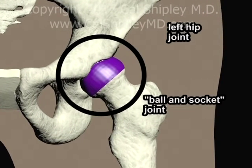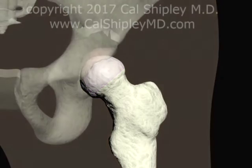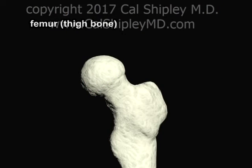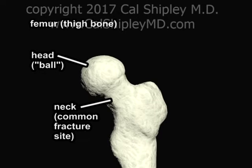The hip joint is known as a ball and socket joint. The ball component of the joint is contributed by the femur, commonly known as the thigh bone. The spherically shaped head of the femur is the ball. Below the head is the neck of the femur, a common location for traumatic fractures of the hip. Below the neck lies the shaft of the femur, which extends all the way down to the knee.